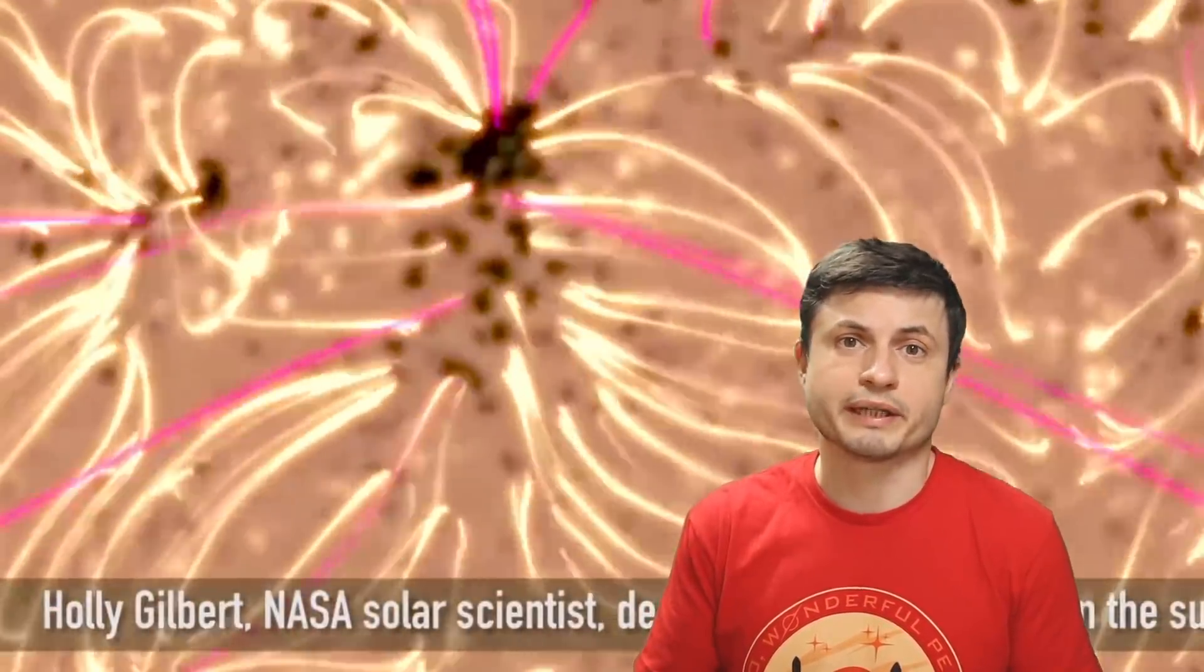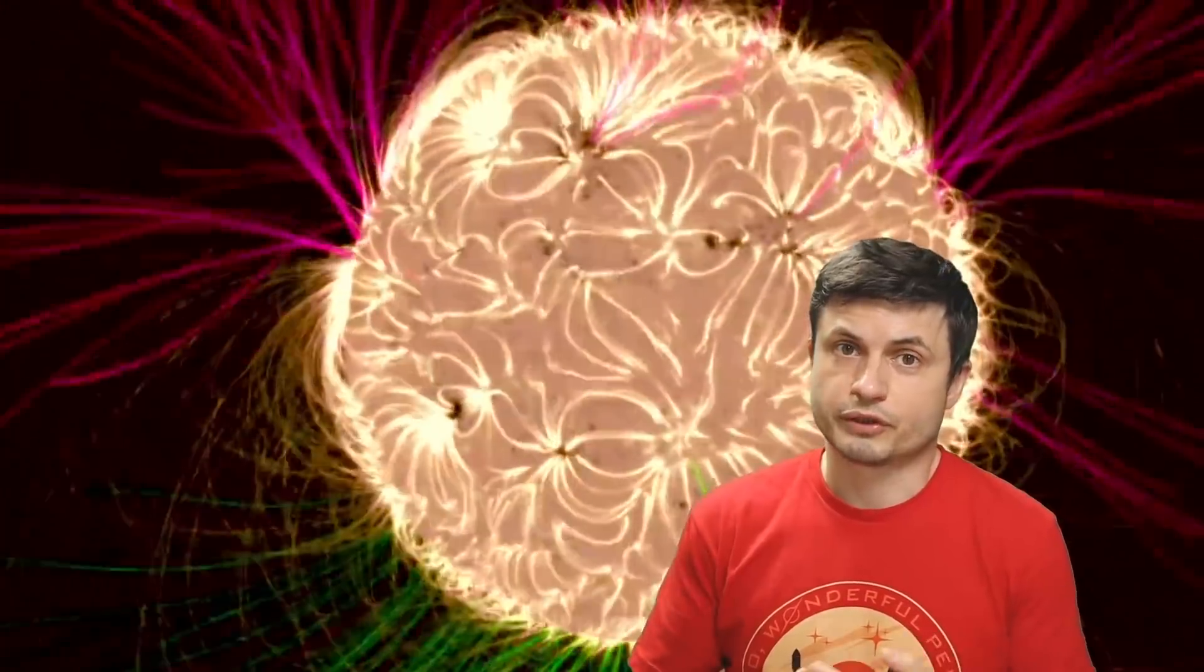So today we know that pretty much most of the objects in the universe to some extent will have some sort of magnetic field around them. So for example, obviously our sun with the magnetic lines creating a lot of different effects on the surface. Obviously our own planet has a magnetic field that's responsible for protecting the atmosphere and a lot of other things on the surface.